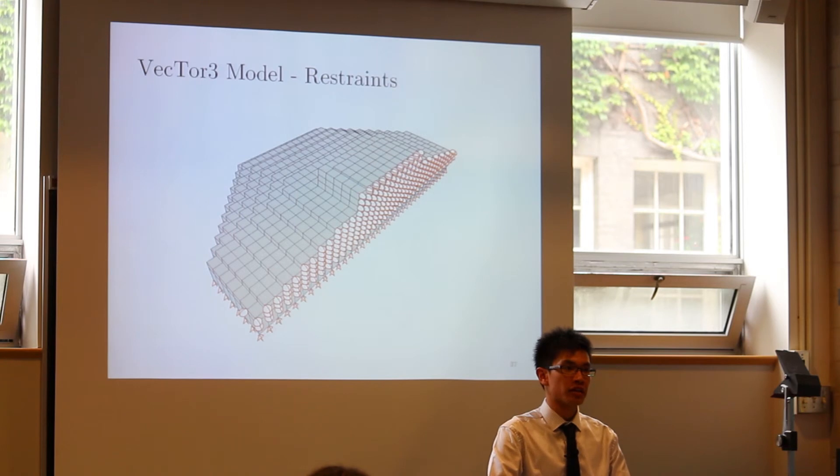Here is the Janus portraying the model restraints of the model. You see the vertical rollers positioned at the plane of symmetry, as well as the fully fixed bottom nodes.